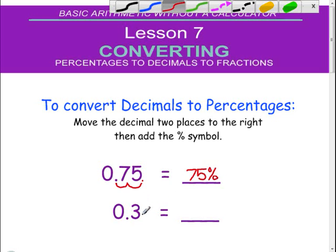When you have a digit that doesn't have any more numbers to the right of it, you still move the decimal two places to the right and fill in any empty spaces with zeros. So in this case 0.3 becomes 30%.